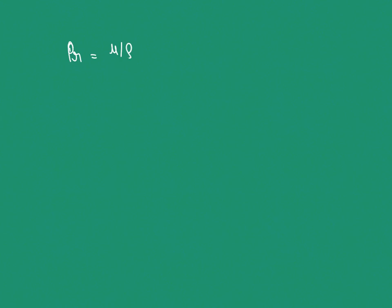Now we will derive the formula of the Prandtl number. The Prandtl number equals momentum diffusivity divided by thermal diffusivity. Momentum diffusivity is kinematic viscosity, which is μ/ρ. Thermal diffusivity is k/(ρ·cp). So Prandtl number = (μ/ρ) ÷ (k/ρ·cp). The ρ terms cancel out, giving us Pr = cp·μ/k.